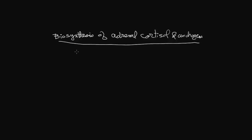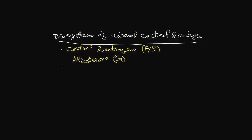The subject of this lecture is the biosynthesis of adrenal cortisol and androgens. First, let us review a few concepts discussed before. The major hormones secreted by the adrenal cortex are cortisol and androgens, produced from the zona fasciculata reticularis, while in zona glomerulosa the major hormone produced is aldosterone. Most steroidogenic enzymes belong to the family of cytochrome P450 oxygenases. The only non-P450 enzyme is 3-hydroxysteroid dehydrogenase.